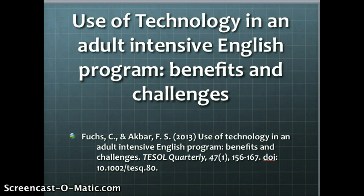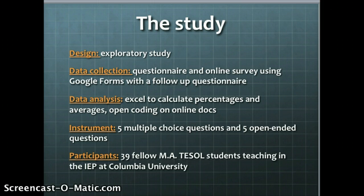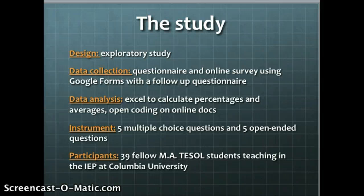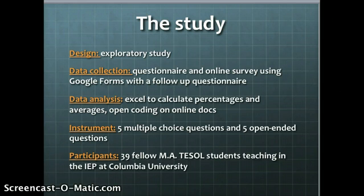This article is by students at Columbia University, and it's called 'Use of Technology in an Adult Intensive English Program: Benefits and Challenges.' The study was exploratory and used questionnaires and online surveys using Google Forms, along with a follow-up questionnaire. They used Excel to calculate percentages and averages, and coded their data qualitatively using online docs. The main questionnaire had five multiple-choice and five open-ended questions, with 39 M.A. TESOL students who taught three days a week at the IEP at Columbia University.